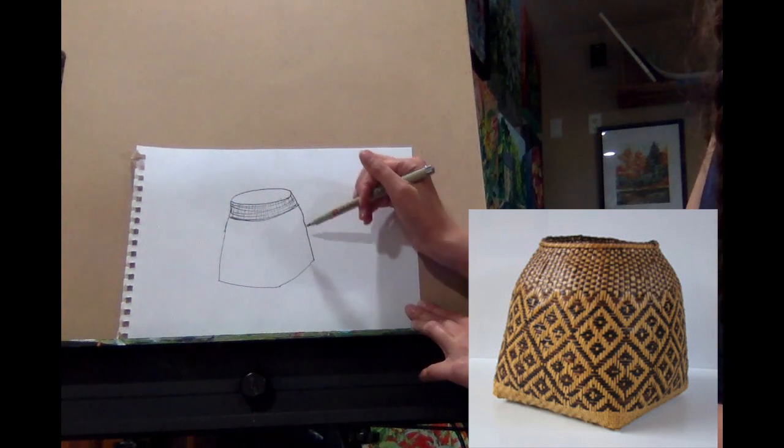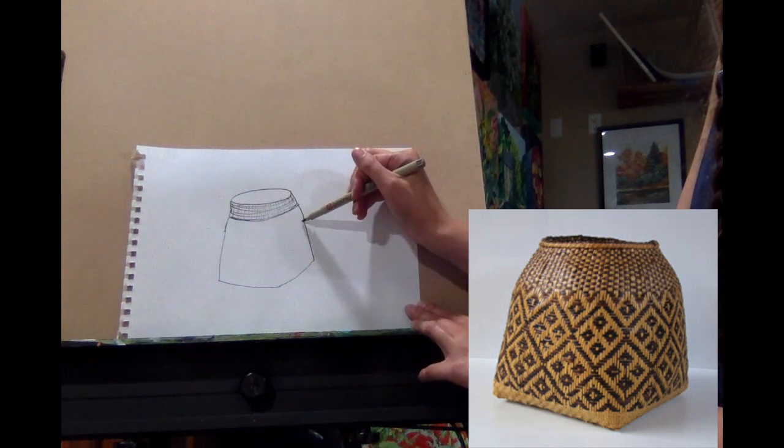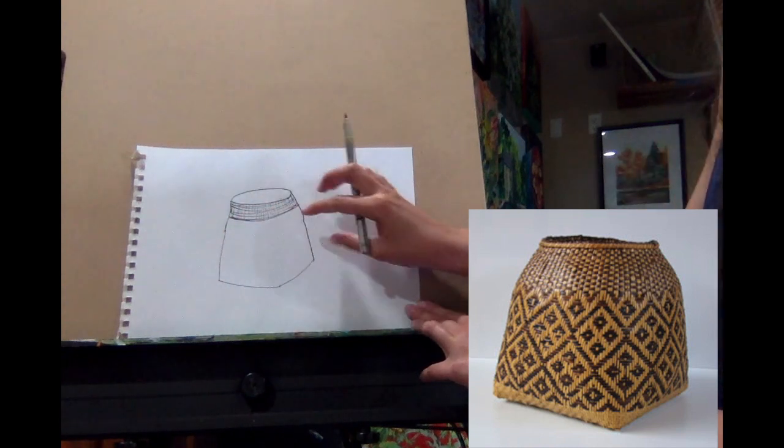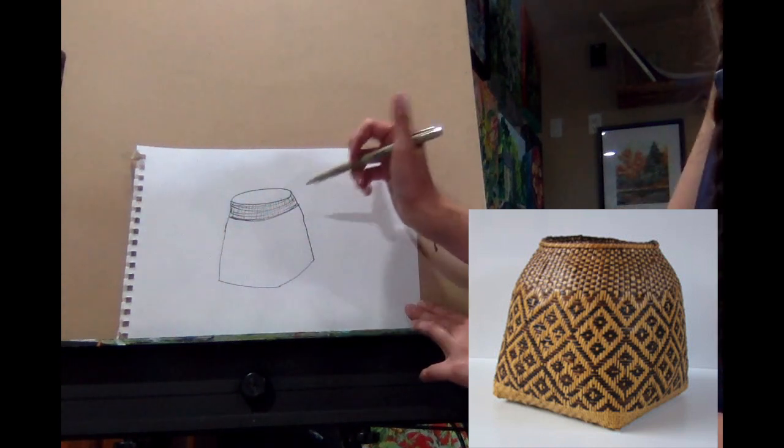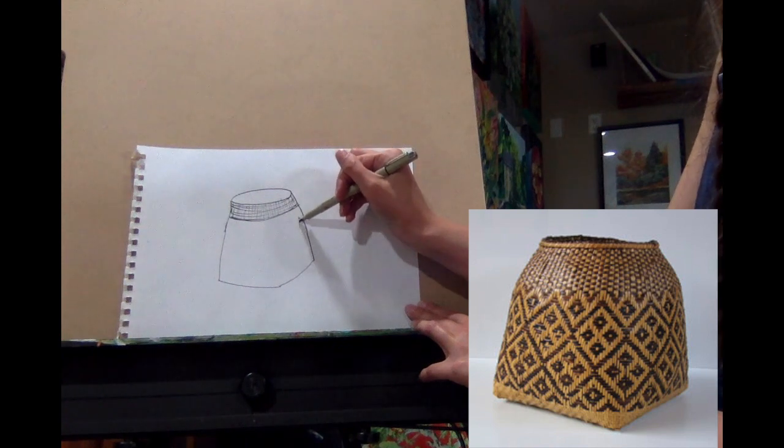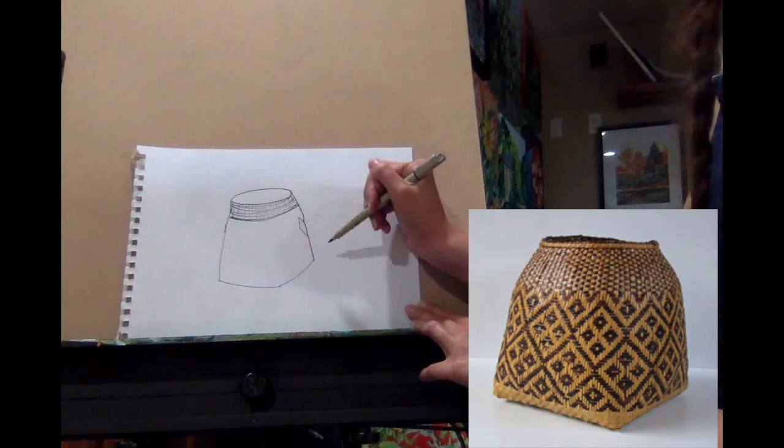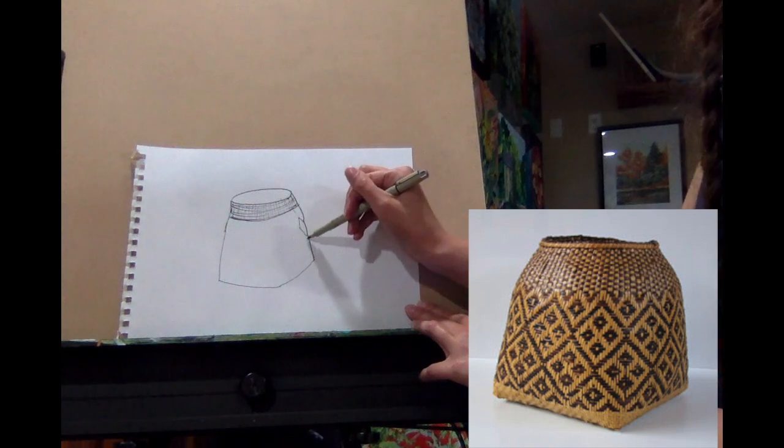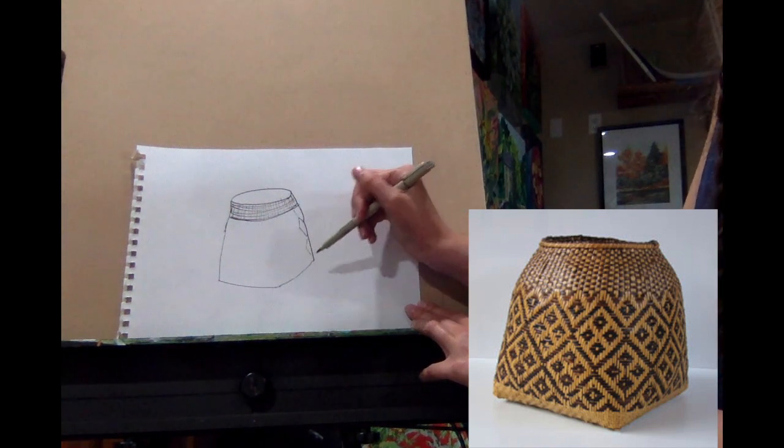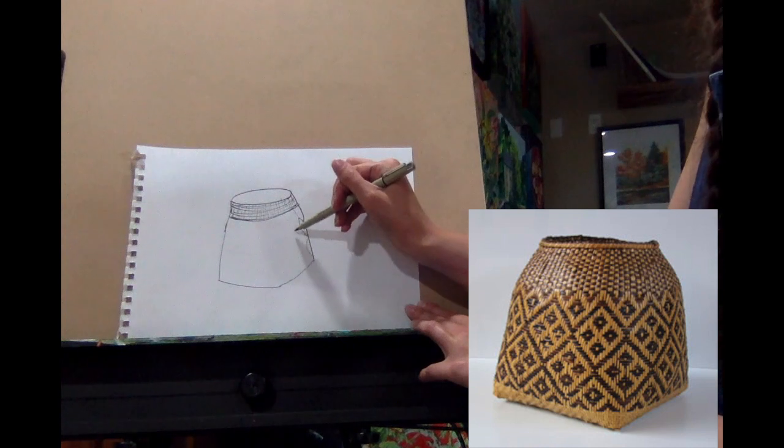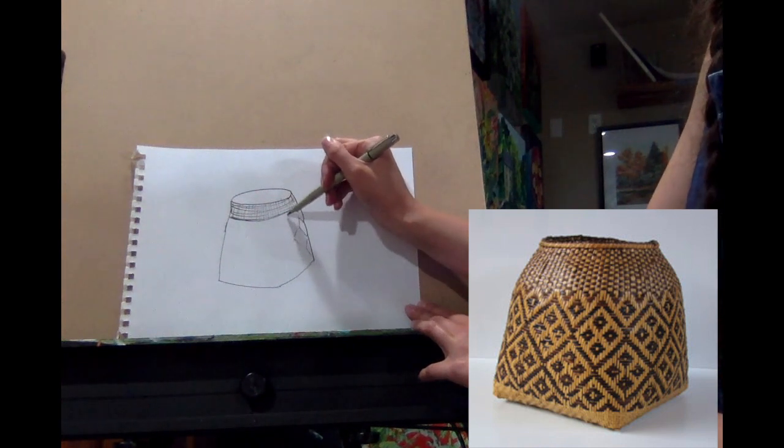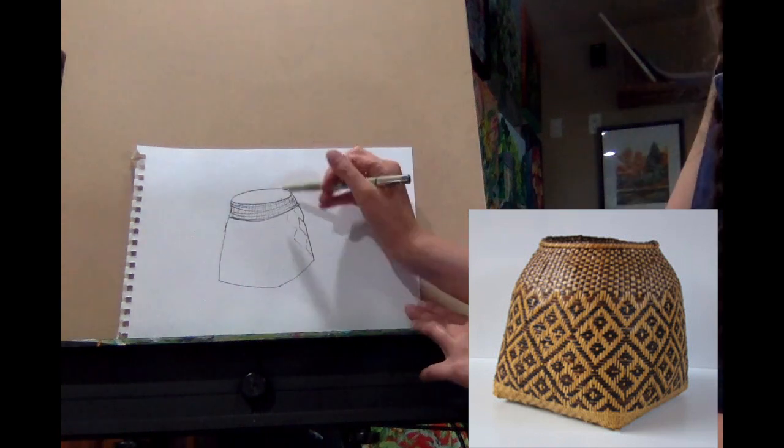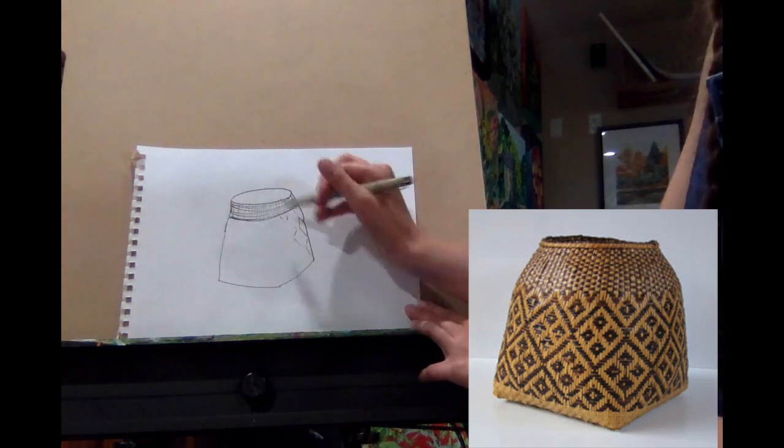And now we're going to go ahead and we're going to add this awesome diamond pattern. Now what we want to make sure is that we're not doing it flat across. We need to make sure we're adding angle to it. So we're going to go ahead and just have a little kind of squish triangle here, and then we're going to do another kind of squish triangle here like that. So you're just seeing a little bit of it, and then you're going to start to see more and more of the triangle as it makes its way around the basket.